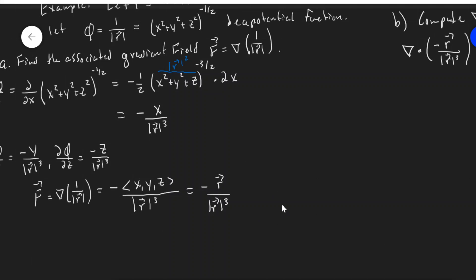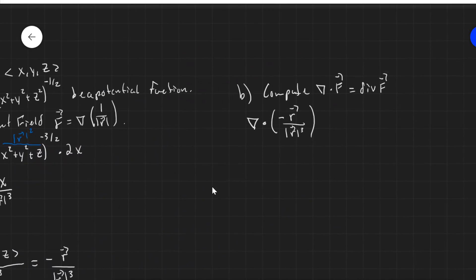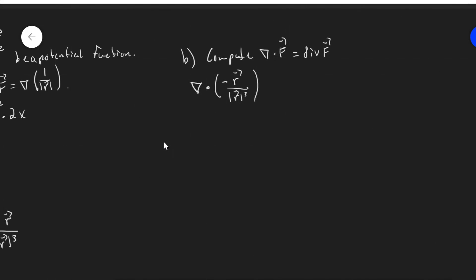Now, one thing I'll say here is that this is an inverse square field. If I took the magnitude of this, I'd find that it's given by one over magnitude R squared. So this might represent an electrostatic force or gravitational force, something like that. And so what we're really working out here is what's the divergence of gravitational force or electrostatic force.